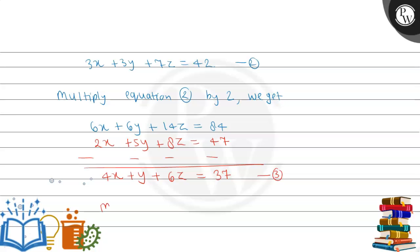Now multiply equation 3 by 3. We get: 12x + 3y + 18z = 37 × 3 = 111.